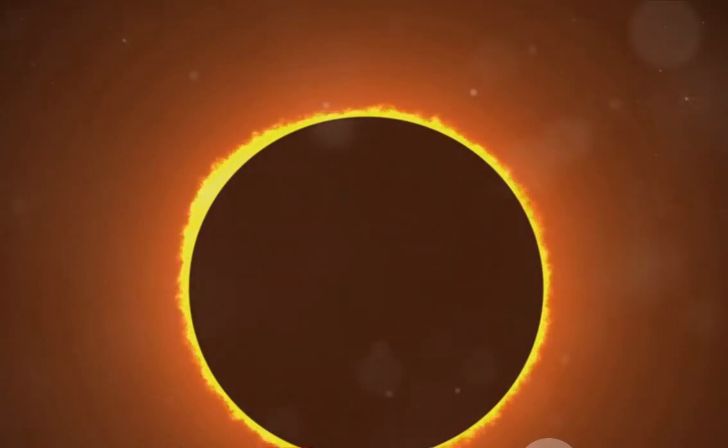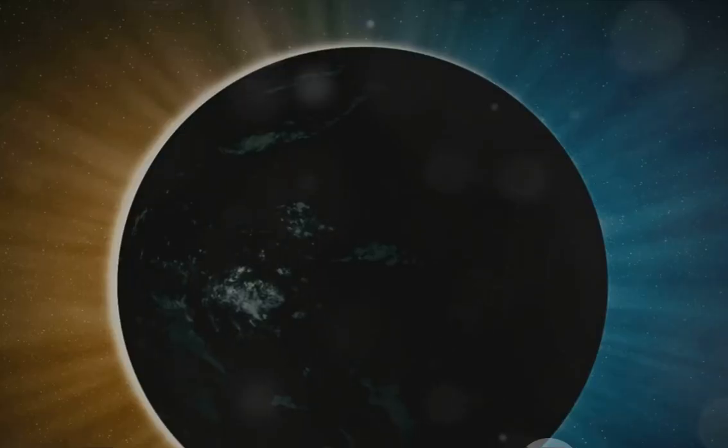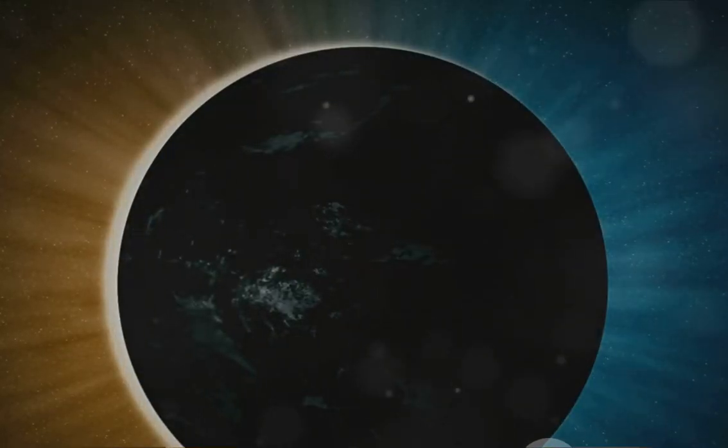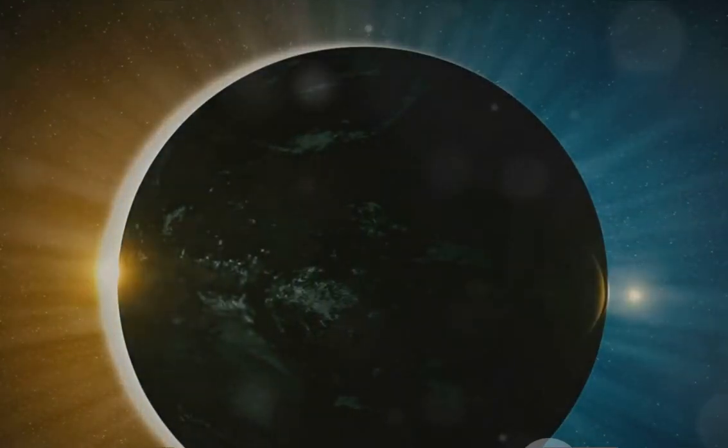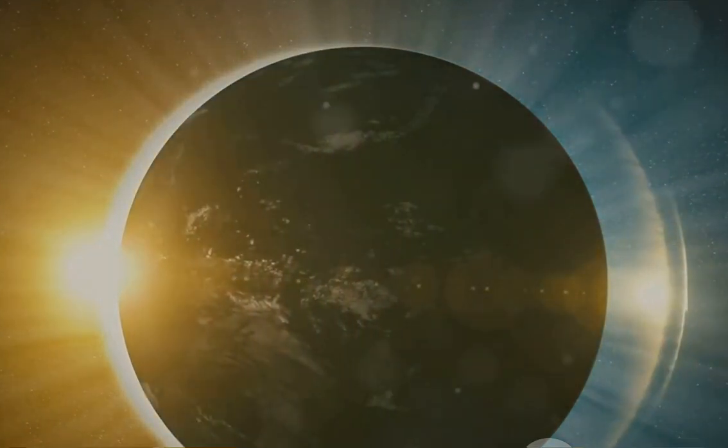One famous test occurred during a solar eclipse in 1919. Astronomers observed that starlight passing close to the sun was bent, exactly as Einstein's theory had predicted.